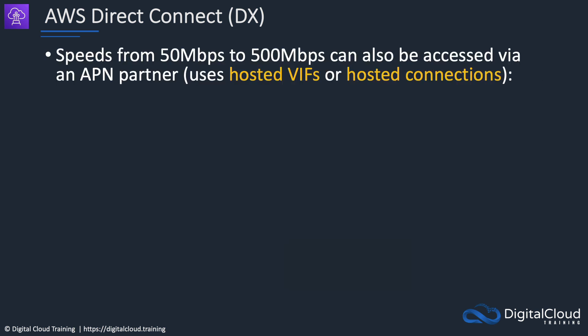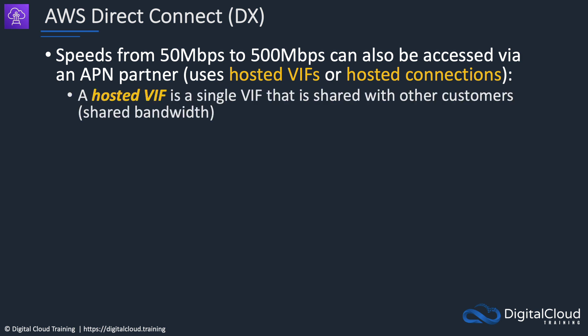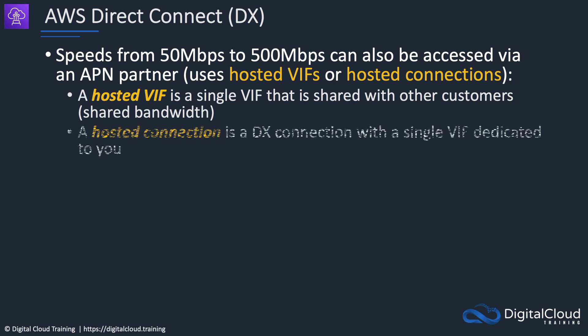VIFs can also be shared with other AWS accounts, and when you do that it's known as a hosted VIF. You can get speeds of 50 megabits per second to 500 megabits per second using an APN partner, who already has a connection to AWS and gives you a subset of that connection. There are two implementation types: a hosted VIF, which is a single VIF shared with other customers giving shared bandwidth, or a hosted connection, which is a DX connection with a single VIF dedicated to you. The hosted VIF is cheaper but comes with shared bandwidth, whereas the hosted connection is dedicated to you.